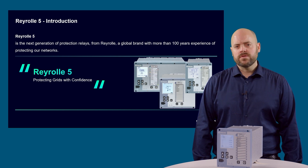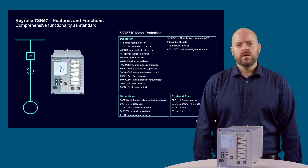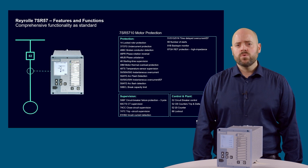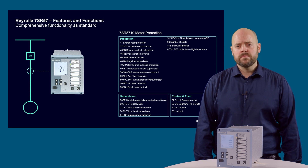So let's take a look at the features and functions that the 7SR57 offers for motor protection applications. The Reiro 7SR5710 motor protection device provides functions designed to protect all motor starting and running sequences. Thermal algorithms are optimised to closely match the thermal characteristics of motors.